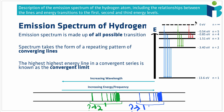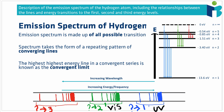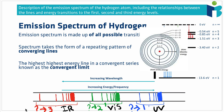The exact same thing happens for transitions going down to n equals 3: another convergent series at even lower energies. The transitions down to n equals 1 occur in the UV region of the electromagnetic spectrum, while the transitions down to n equals 3 occur in the IR region. This pattern keeps going — for transitions down to n equals 4, we'd expect the same kind of convergent series at lower energies still.